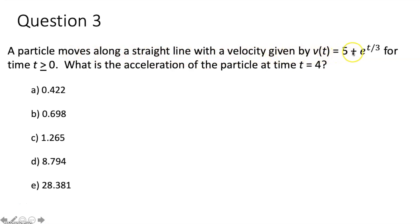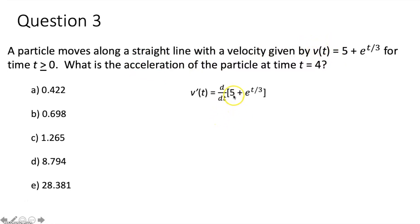Question three says a particle moves along a straight line with velocity given by v of t equals 5 plus e to the t over 3 for t greater than or equal to zero. What is the acceleration at time t equals 4? To get the acceleration function from the velocity function, you just take the derivative. The derivative of 5 is zero. For e to the t over 3, we have a function within a function, so this requires the chain rule — take the derivative of the outer function and leave the inner function alone, then multiply by the derivative of the inner function. Our inner function is t over 3 and our outer function is e to the something.